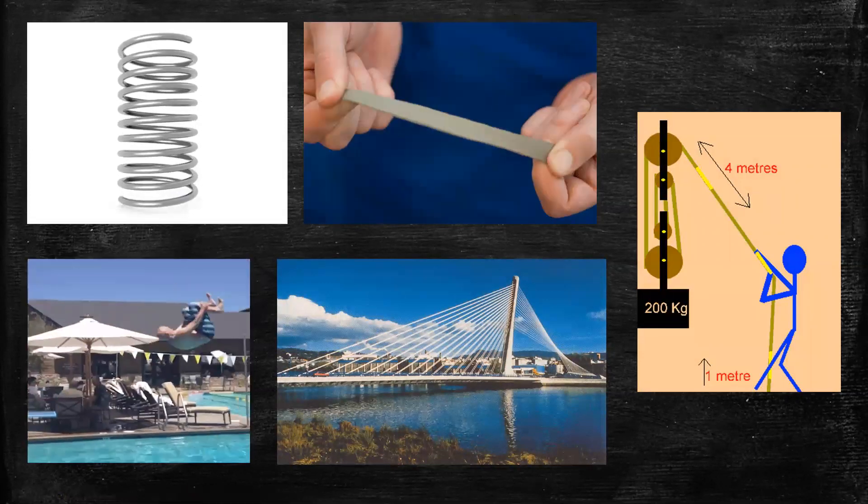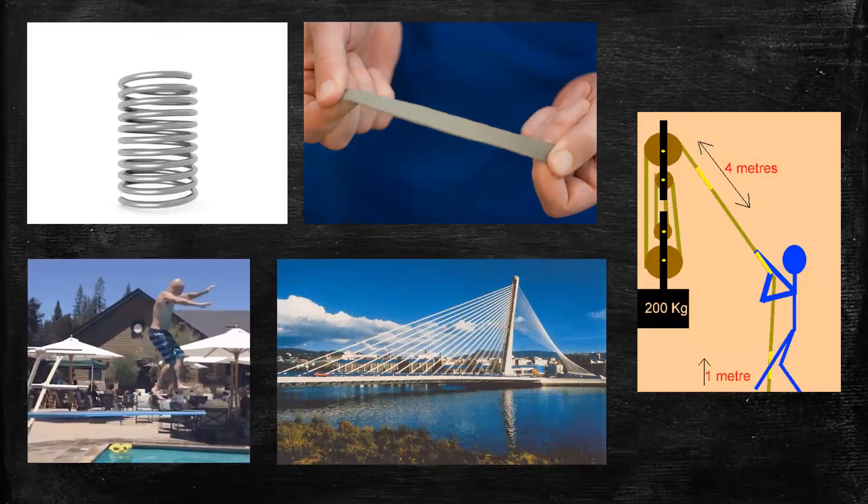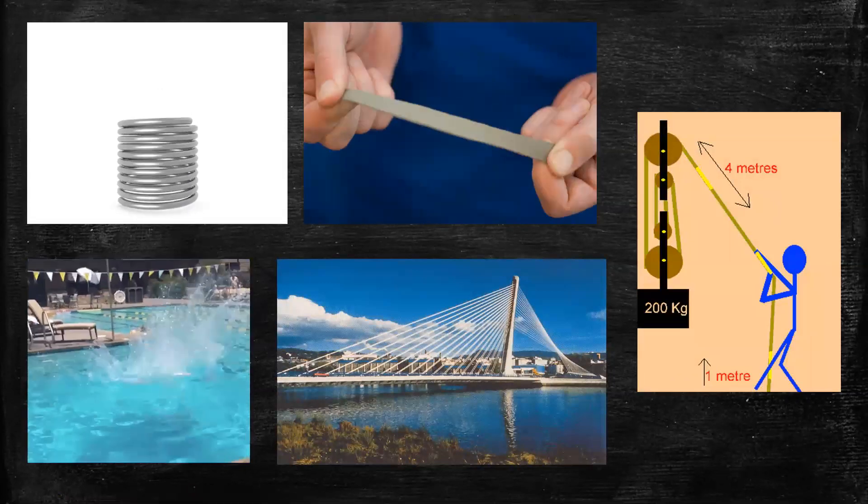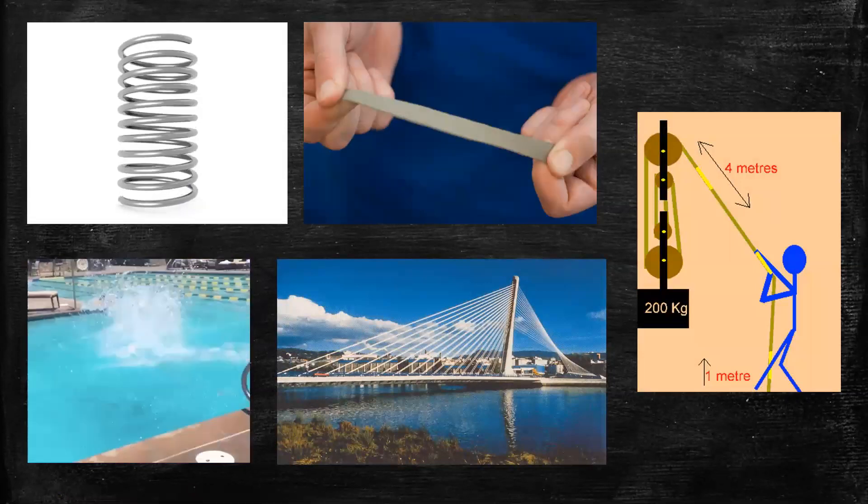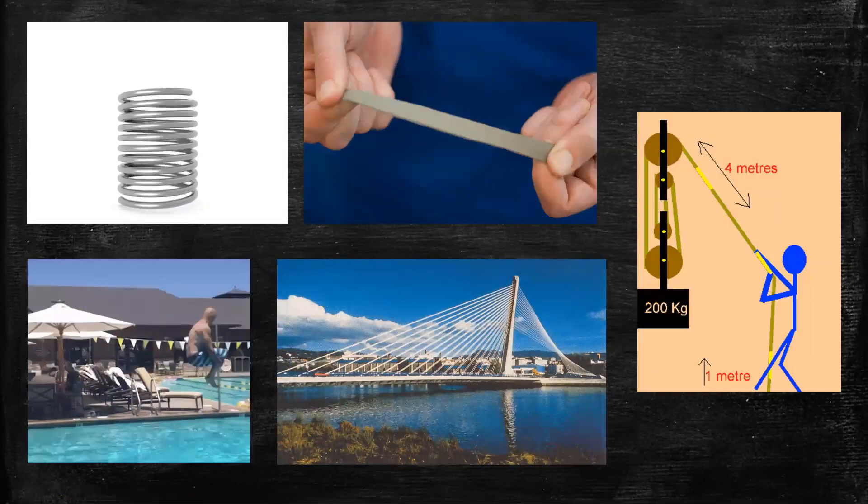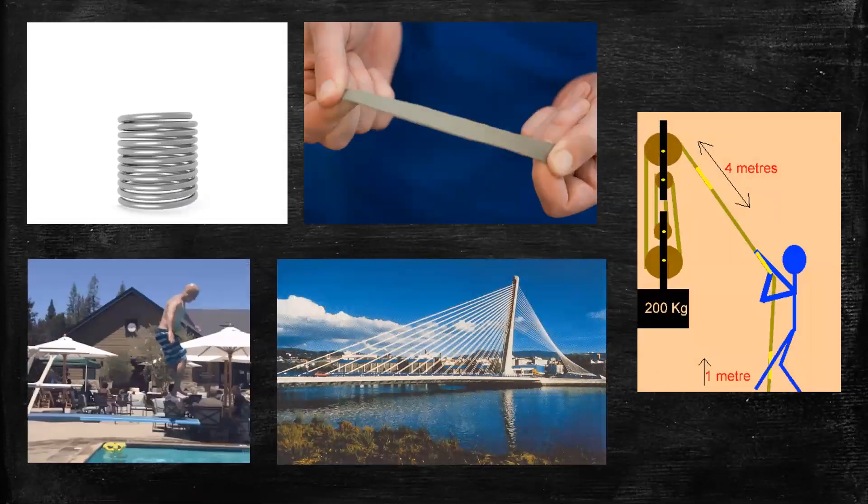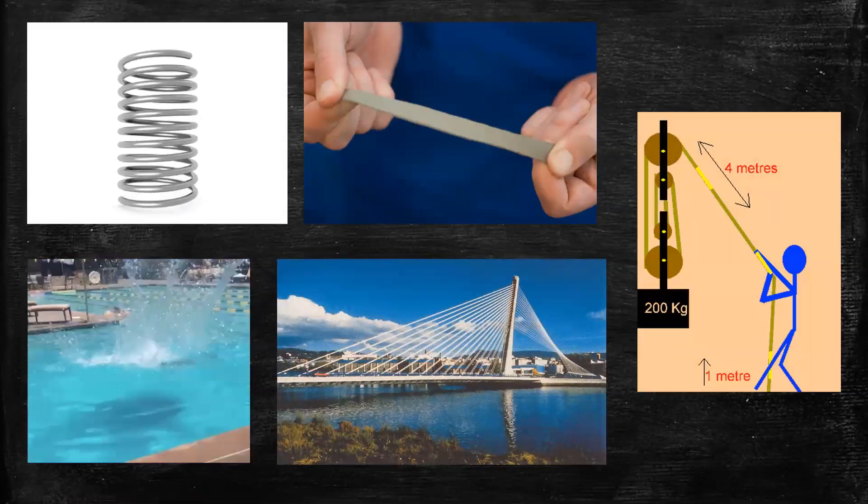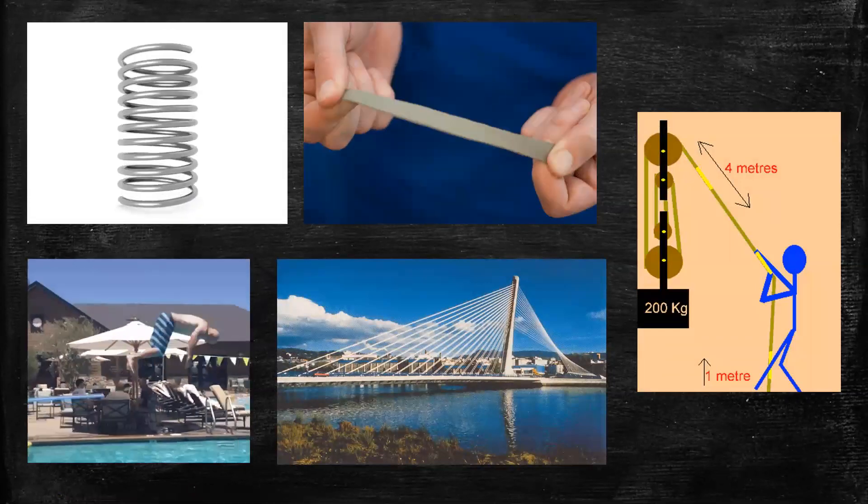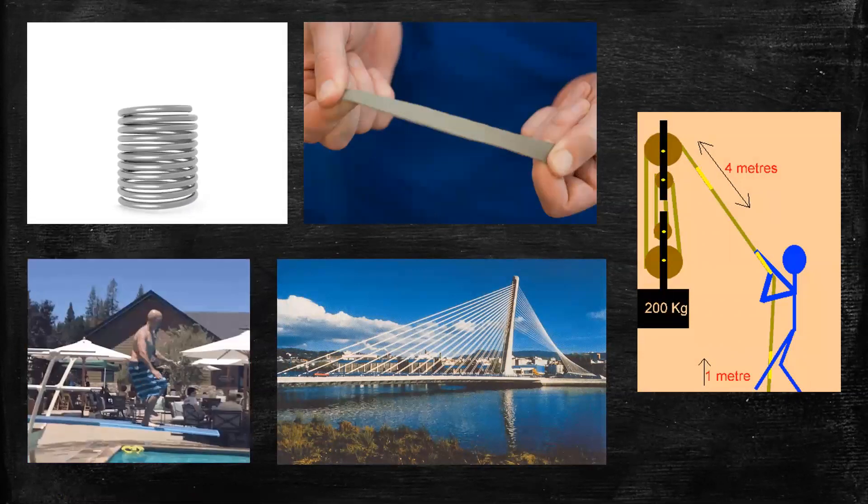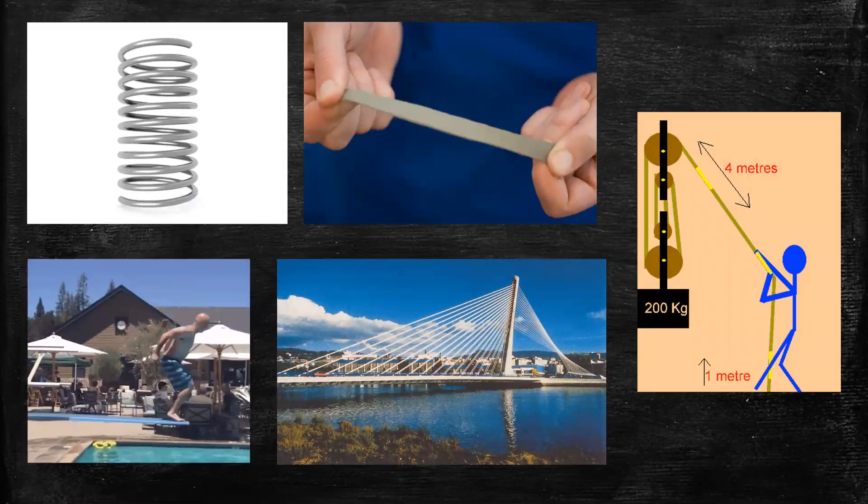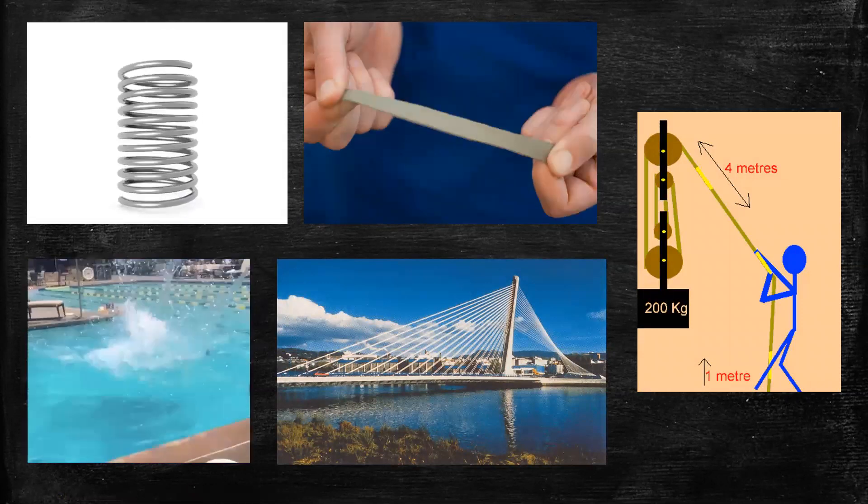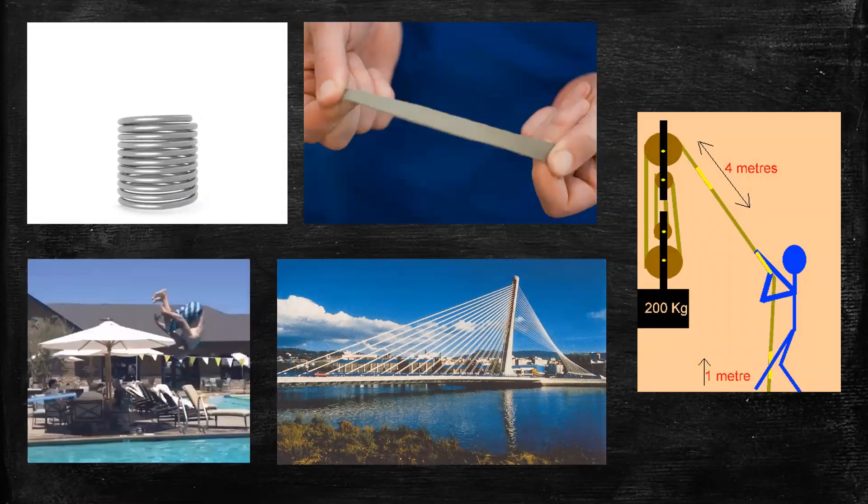Same with a diving board. A deflection happens when a man jumps to the pool. Such material is called elastic because after it experiences a force or deformation to its shape, it has ability to return to its original shape.